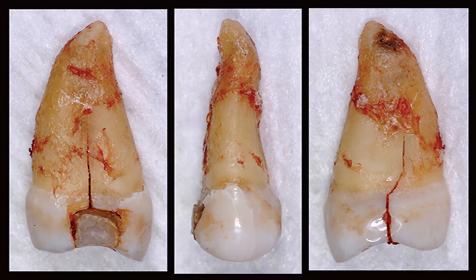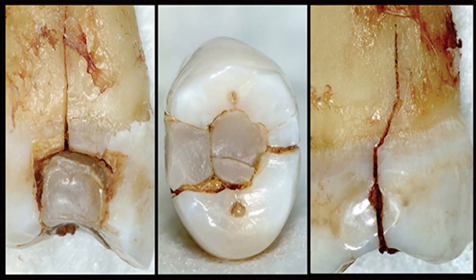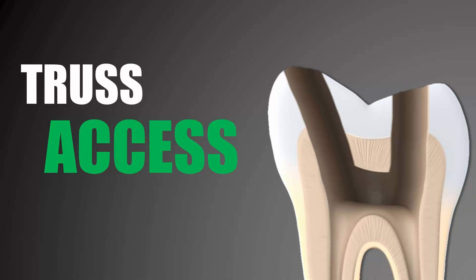Even though the root canal treatment may be successful, after certain years the tooth may undergo development of cracks and fractures. More often the reason for this type of failure is attributed to excessively large access cavity preparation. Is there some way that we could prevent this type of fractures and cracks from developing and loosening of the tooth?